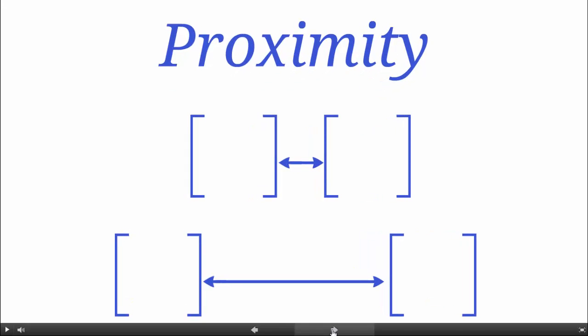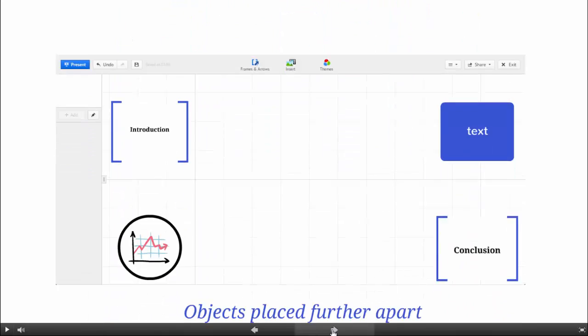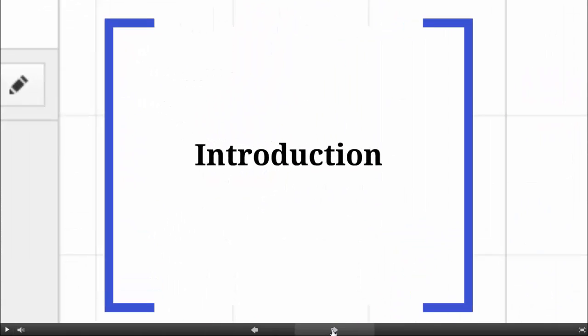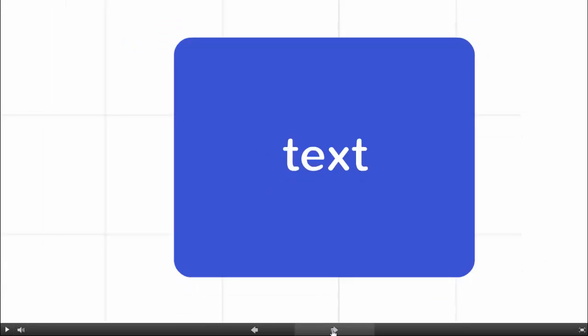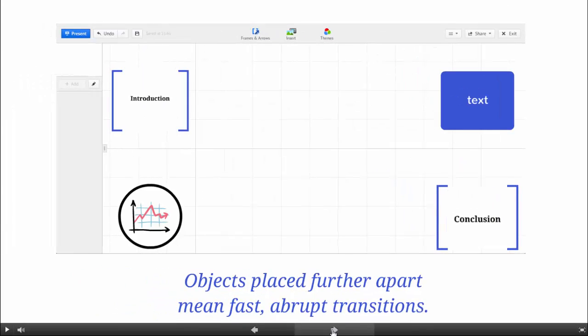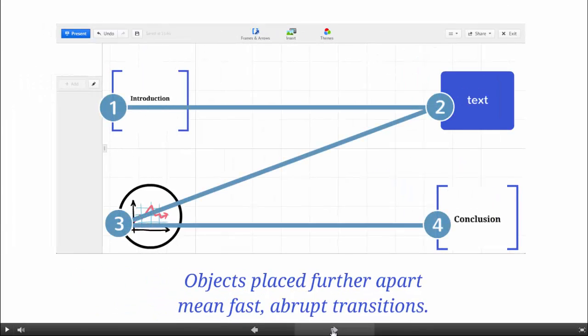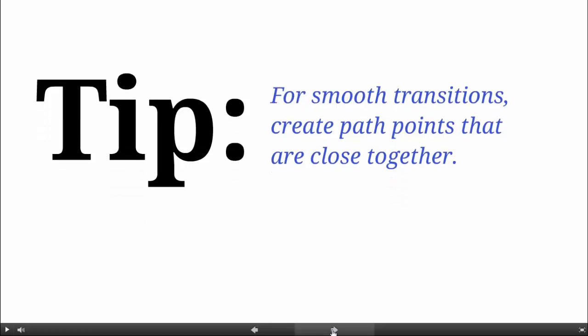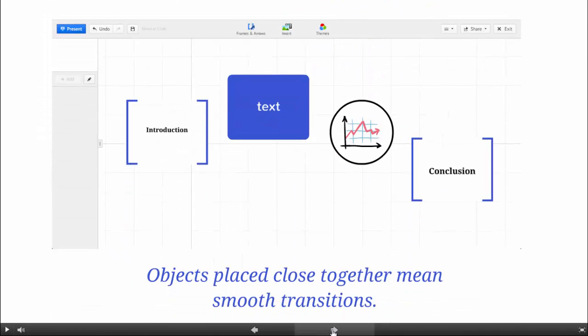First, let's take a look at proximity. Objects that are a long distance apart on your canvas can lead to really fast transitions. To avoid these big transitions, try placing objects closer together. Objects that are closer mean smoother transitions.